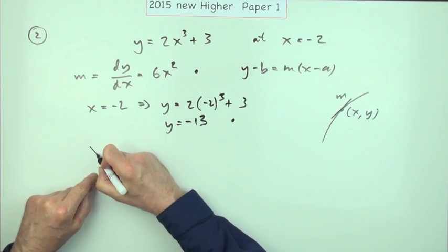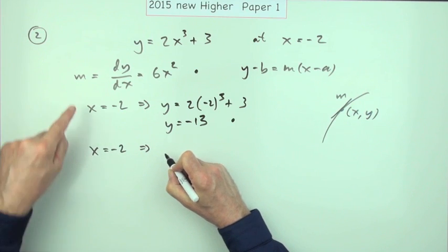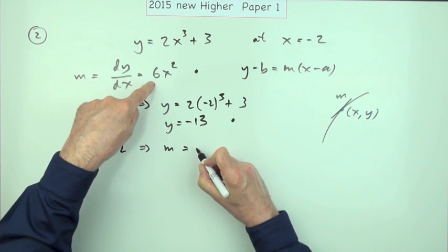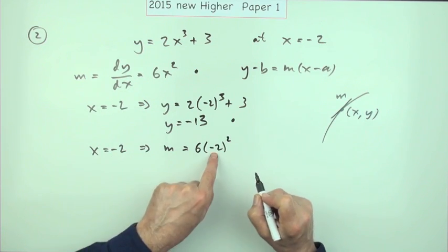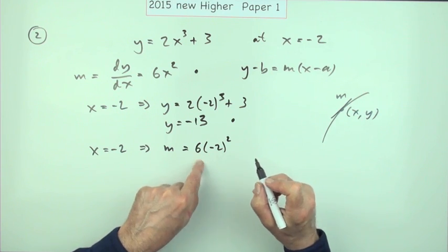x is negative two means the gradient is given by 6 times the negative two squared. Negative two squared is four, times six is 24. That's a mark.